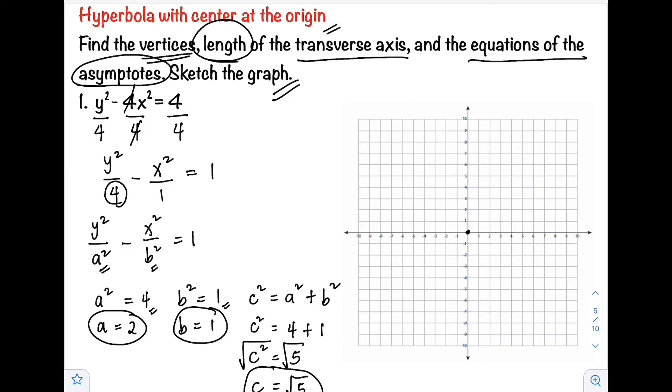Our hyperbola opens vertically, so our a is found on the y-axis. Count 2 units upward: 1, 2, here is our first vertex. Then count 2 units down to -2. This is now our transverse axis.